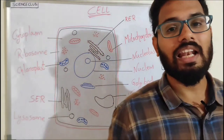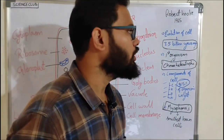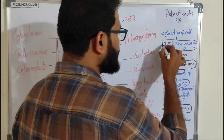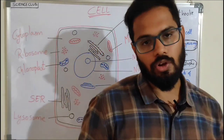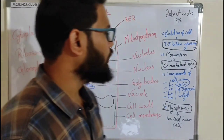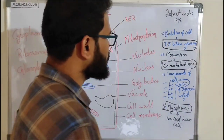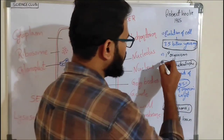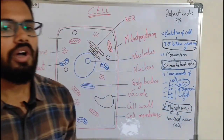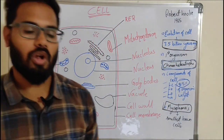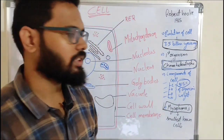Before discussing the cell and cell structure, we have to know when the cell evolved. The cell evolved 3.5 billion years ago. And what was the first organism? The first organism was chemo-heterotrophs.